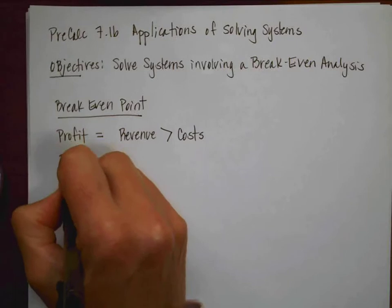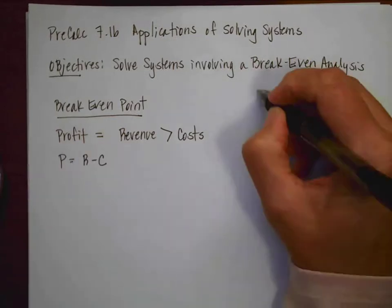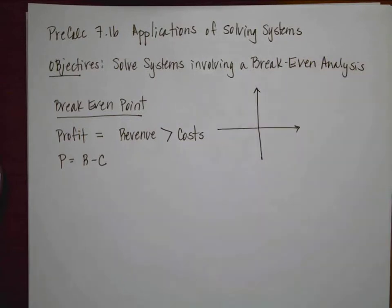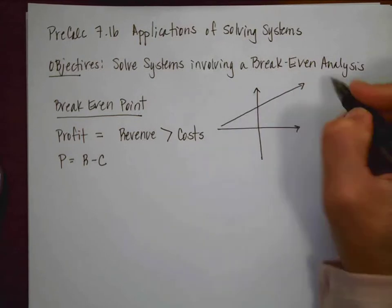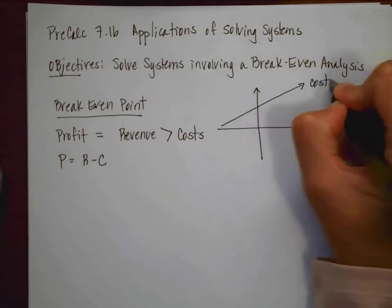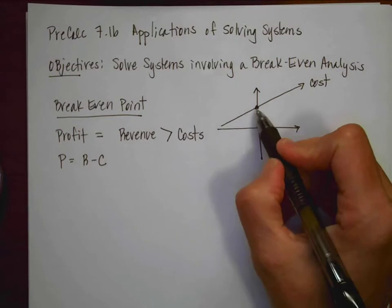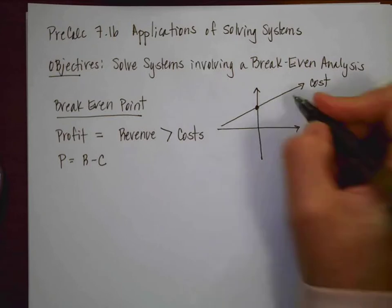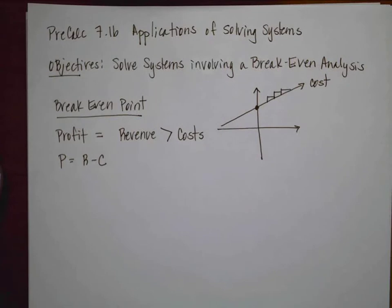My profit is going to equal revenue minus cost. So if we thought about this graphically, I think it helps to explain the situation. Let's say I am going to make something to sell, and this is going to be my cost. Notice that it has a big y-intercept because that is usually how much it costs to start producing something. And then I have a slope, which would be the individual cost of making each item.